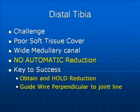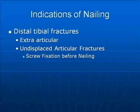If the nailing doesn't go well, everything goes into the well. The point starts right here: people used to say 'ream, then reduce' — I say no. You put your guide wire once your fracture is reduced. It has to be perpendicular to the joint line both in AP and lateral views; otherwise things will go wrong when you start reaming.